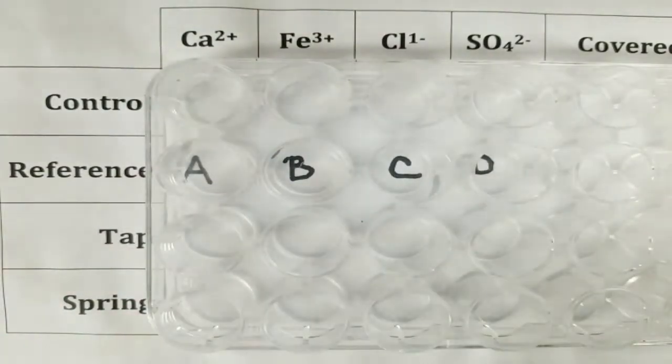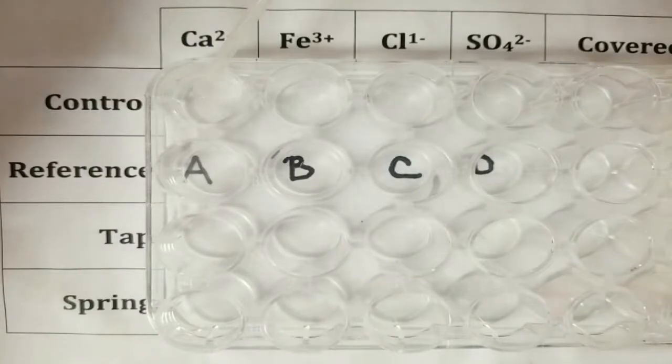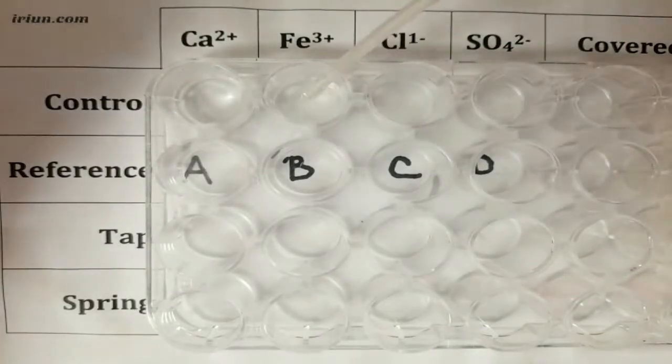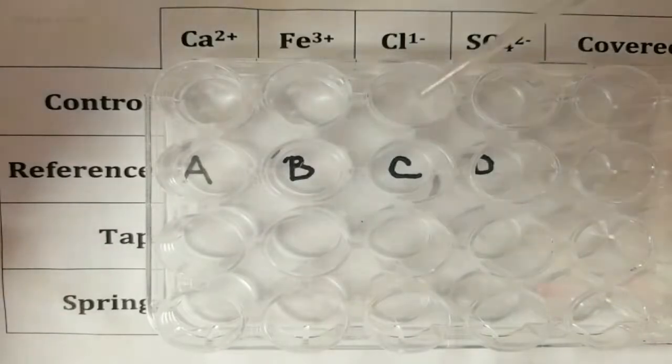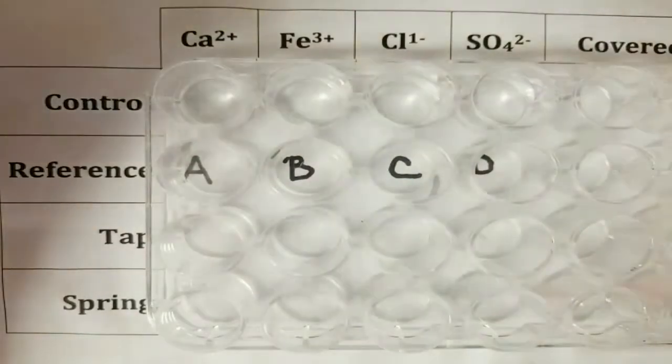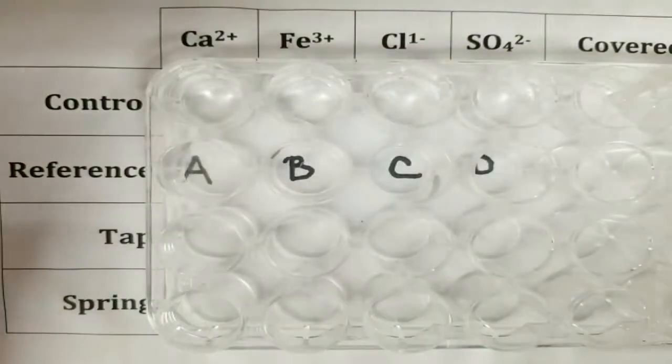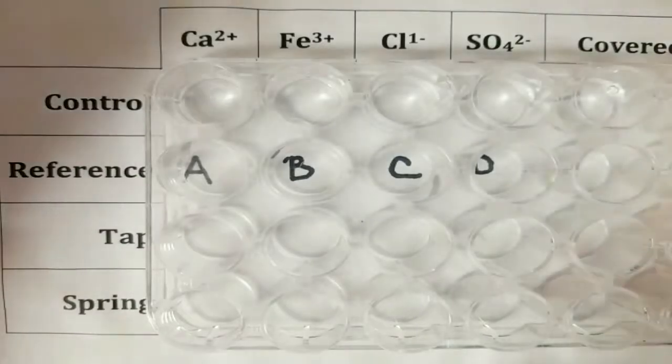Now I am going to place 20 drops of the control in each one of the wells here. So we are going to do 20 drops in every single one of the wells in each of this row for the control. I am also going to put 20 drops in this last well here that I am not going to react with anything.